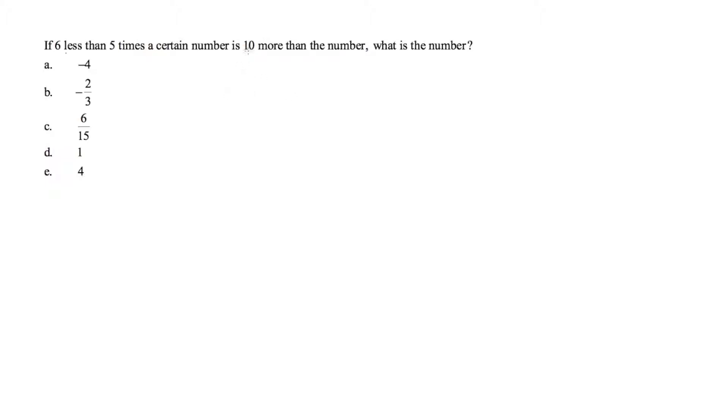And also variables if there are any. So 6 less than means minus 6, 5 times a certain number. In this case, we don't know what that number is, so let's just call it n. So 5 times n means equal sign, 10 more than, 10 plus, then the number again we have that same n.